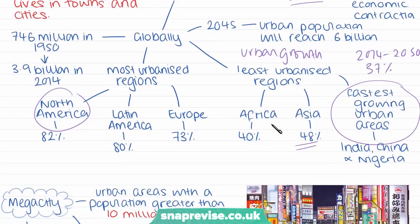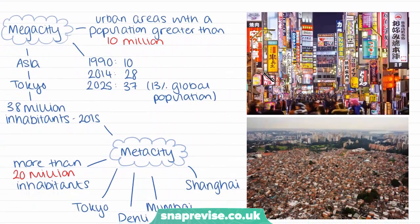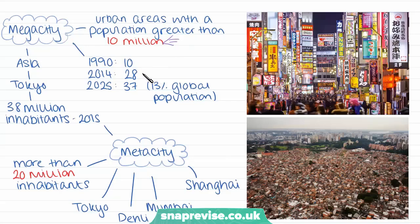One other striking feature of the last 30 years has been the rapid development of megacities. Megacities are urban areas with more than 10 million people in their population. In 1990 we only had 10 megacities, but by 2014 we had 28, and by 2025 it's predicted there will be 37 megacities across the world. These 37 megacities will hold around 13% of the world's global population.